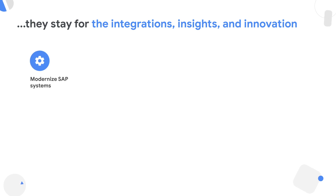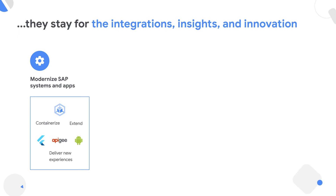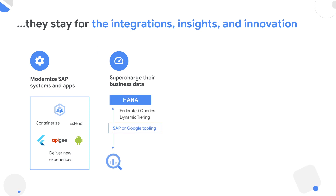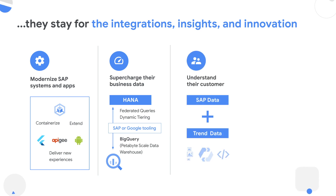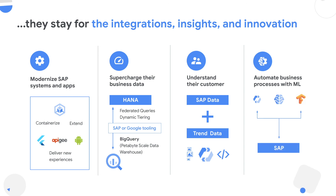Most customers start with the infrastructure story, but they stay with us for integration, insights, and innovation. SAP applications talk not only to other SAP systems but also to non-SAP systems and SAP Cloud platforms like Hybris and Ariba. As a result, they need a strong, secure, robust API platform — and that's where Apigee comes in, the platform of choice for most SAP enterprises. For building a strong data culture with access to insights for both technical and business users, BigQuery delivers that capability. And when it comes to AI/ML on Google Cloud, sky is the limit for solving business problems.